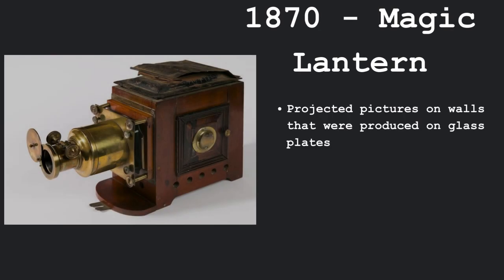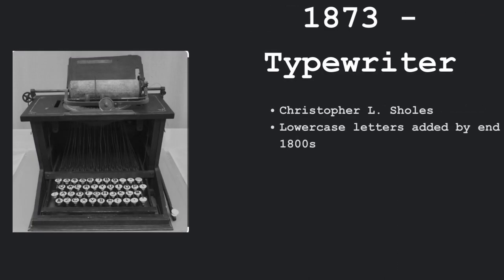In 1870, the magic lantern was invented and it projected pictures on walls that were produced on glass plates. In 1873, we have the typewriter that was invented by Christopher L. Scholes. His version was made up of mainly capitalized letters and then the use of lowercase letters was eventually added by the end of the 1800s.